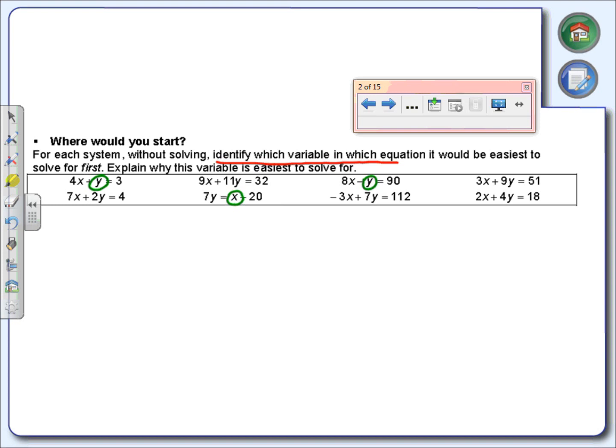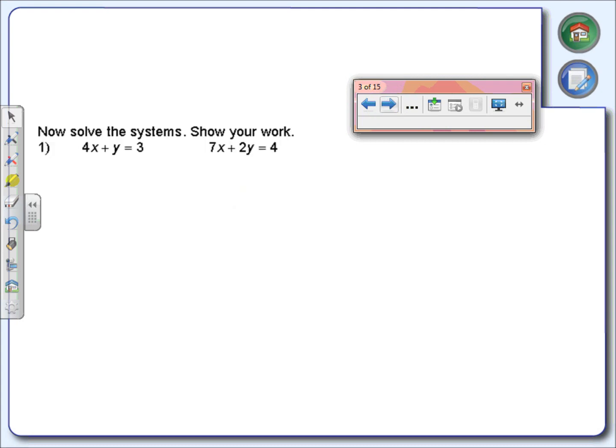Now unfortunately, sometimes that's not the case. If you look at the last system, there is no variable that doesn't have a number in front of it. So we would still have to choose one. It really wouldn't make a difference for me. I would probably choose this one right here. If you choose something different, it wouldn't necessarily make it harder, just not a problem. So all we did was identify what's easiest to solve.